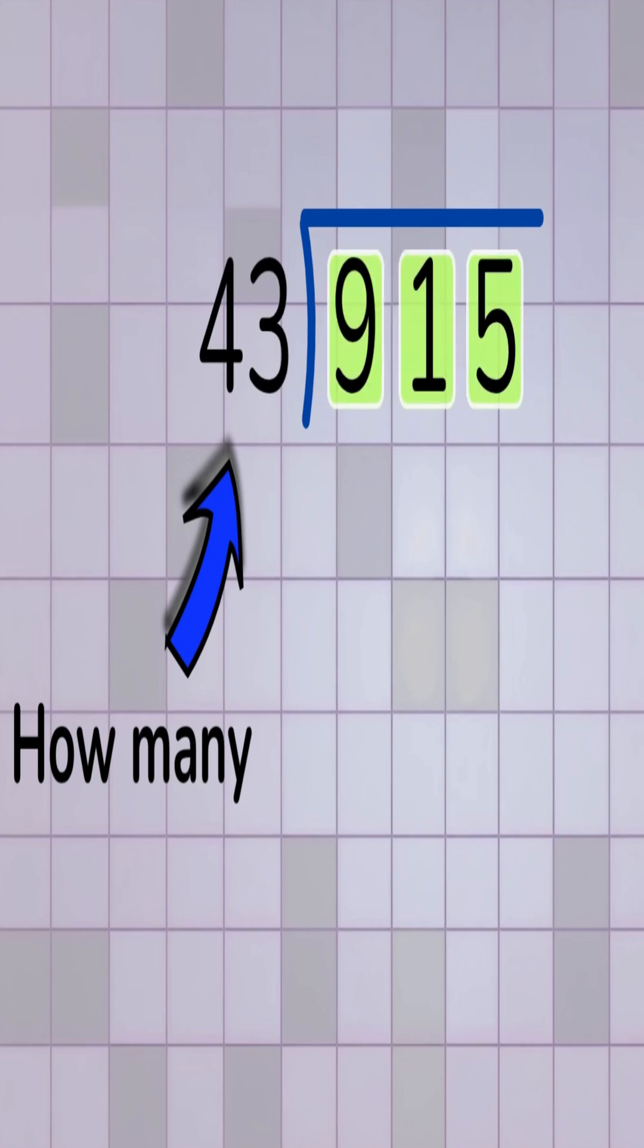To solve this, we begin by looking at the first part of the number, the digits that make 91. We look at 91 and ask, how many times does 43 go into 91?